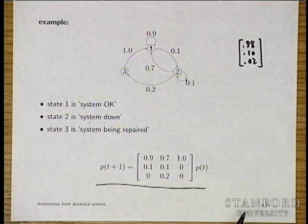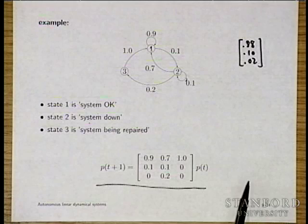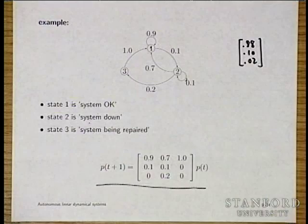Knowing these steady-state probabilities lets you estimate your repair bill, calculate throughput, and evaluate whether upgrading to a better machine would pay for itself. If the machine costs $14 million, knowing what fraction of time it's operational is very important. With 10 states and many transition probabilities, there's no way to intuit these answers — that's where the linear dynamical system framework becomes essential.